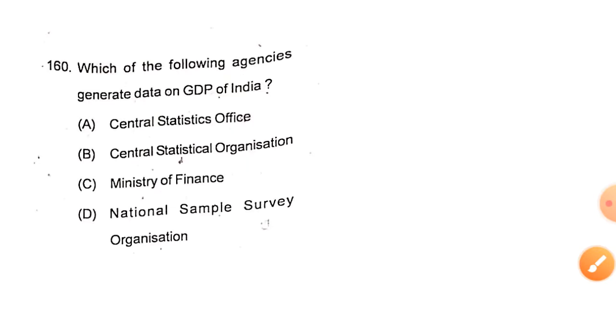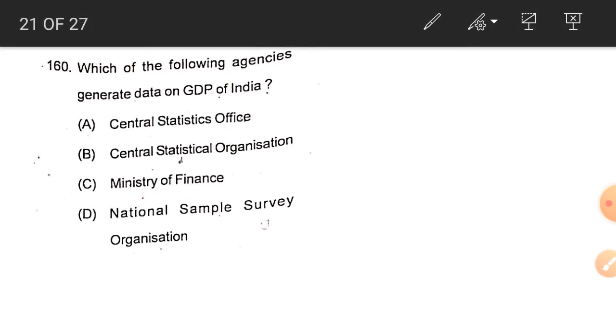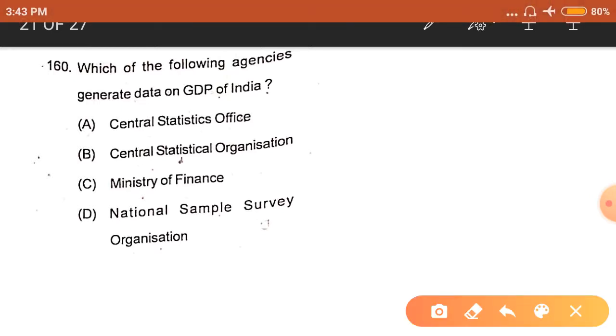The next question is: which of the following agencies generate data on GDP of India? The answer is Central Statistics Office, CSO.